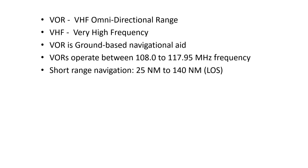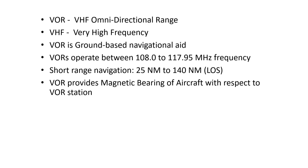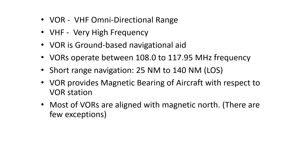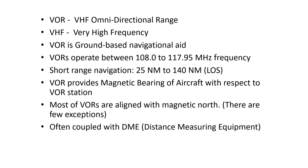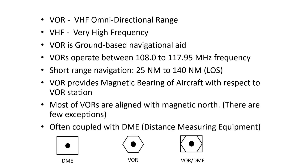VOR works within line of sight. It provides the bearing of the aircraft with respect to the selected VOR station. Almost all VOR stations are aligned with magnetic north. They are often coupled with DME, that is Distance Measuring Equipment. If a station is equipped with VOR and DME, it can give you your bearing and your distance with respect to the selected VOR station. Here you can see the symbol for DME and the symbol for VOR.